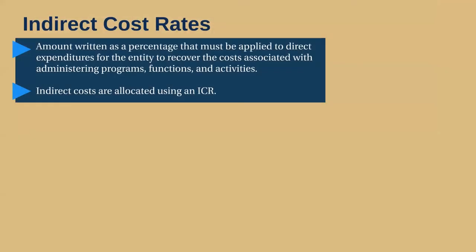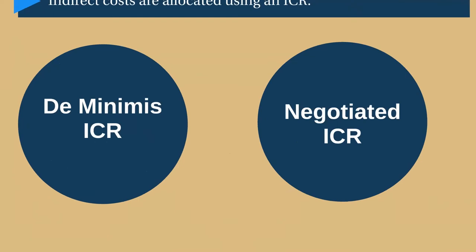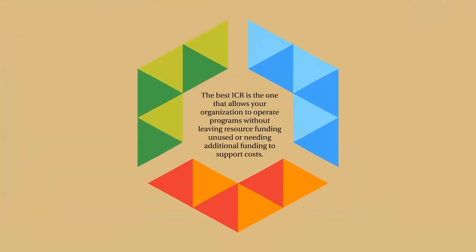Now let's talk about ICRs. An ICR is the amount, written as a percentage, that a grantee determines must be applied to direct expenditures for the entity to recover the costs associated with administering programs, functions, and activities. Indirect costs are allocated using an ICR. Your organization can either use the de minimis ICR or establish a negotiated ICR with your cognizant agency. Whichever ICR is used, it will apply across all federal grant programs that an organization operates. Selecting the best ICR is an important decision that impacts the budget of every federal grant your organization receives, and involves evaluating the benefits and disadvantages of each.